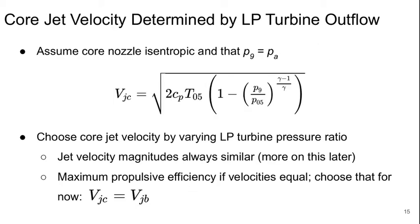Then to get the core jet velocity, this is based on the low pressure turbine outflow rate. Again, we'll assume that the core nozzle is isentropic, so P9 equals PA. And then we get the jet velocity for the core in terms of P9 over P05, which is the nozzle pressure ratio. But P05 and T05 are the unknowns. And what we can do is we can choose the core jet velocity by varying the low pressure turbine pressure ratio.